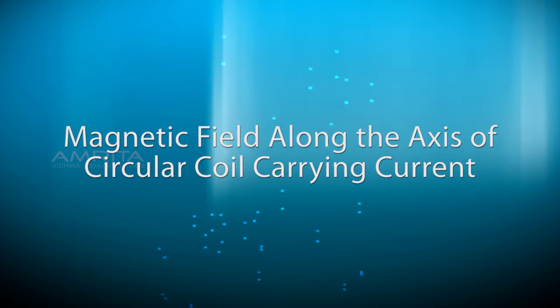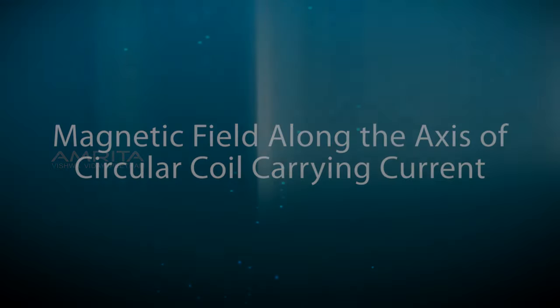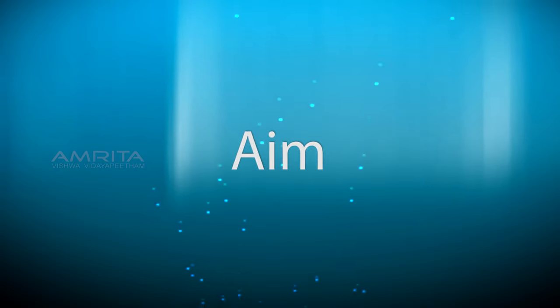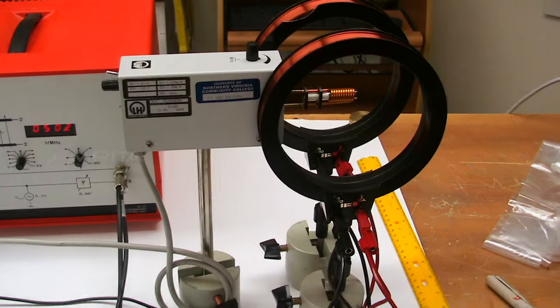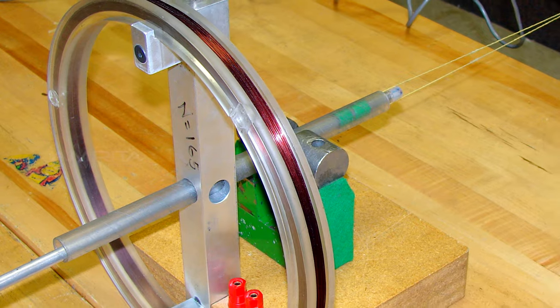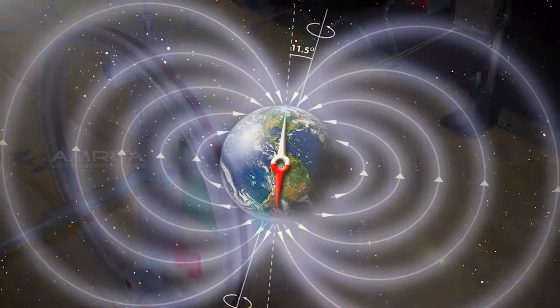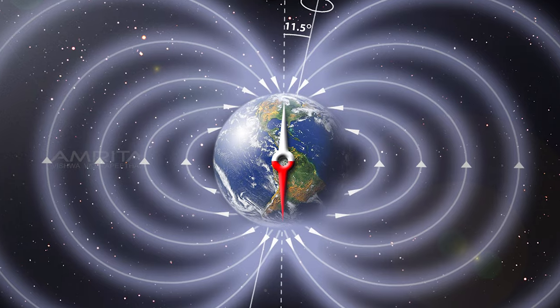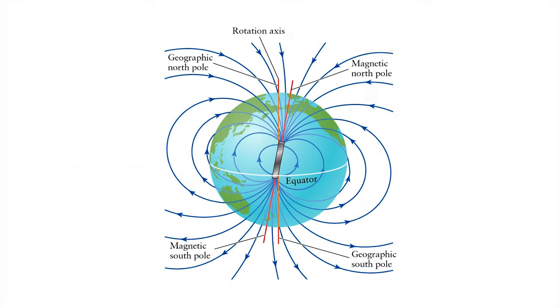Magnetic Field Along the Axis of Circular Coil Carrying Current. Aim: To study the variation of magnetic field intensity with the distance along the axis of a circular coil carrying current and to verify the value of horizontal component of Earth's magnetic field B0.